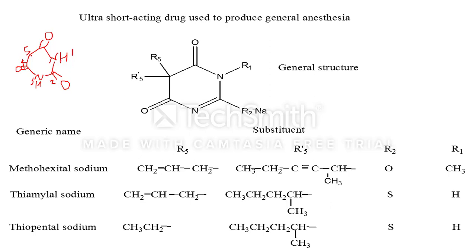By substituting the H group at position one with alkyl groups, at the second position some lipophilic groups — such as sulfur instead of oxygen — are substituted, since sulfur is more lipophilic than oxygen. At the third position, the N-H bond is shifted and a sulfur or oxygen group forms a salt with sodium. At the fifth position, substituents like dialkyl groups are added. This is the structure of barbituric acid with substitutions at different positions.